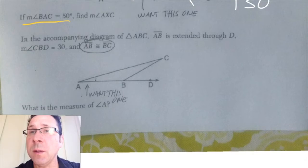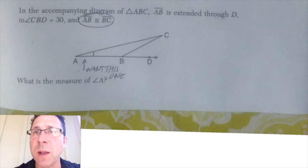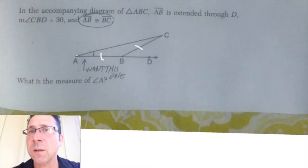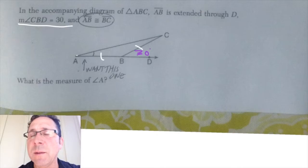Let's take a look at the next one. So in this one we're looking for angle A. And they also are telling me that there's an isosceles triangle in the picture. They're telling me that AB is the same length as BC. They're telling me that angle CBD is 30 degrees. So I know it's 30 degrees there on the outside.